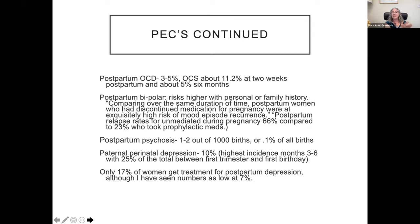Postpartum psychosis makes the headlines most, but these are infinitesimally small numbers. Perinatal paternal depression sits at about 10%, with the highest incidence around three to six months post-delivery — about 25% of cases present in months three to six. There is no solid research I'm aware of for same-sex or poly families, but I would imagine those numbers might be even higher. The really hard part: only about 17% of women get treatment for postpartum depression — some numbers are as low as 7%. That's 83% of new families starting out with any of these diagnoses underserved.